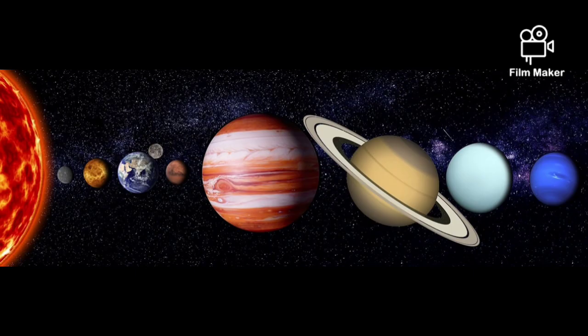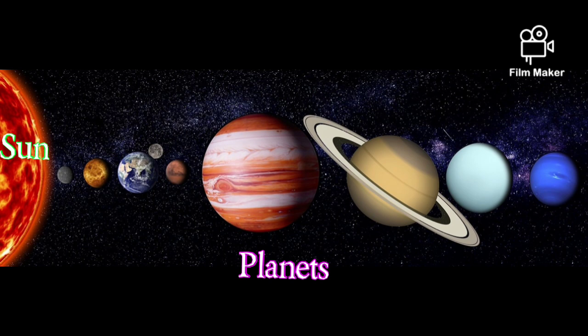The sun, which is a star, and the planets that revolve around it are together called the solar system. Besides the planets, the solar system also includes various other heavenly bodies.